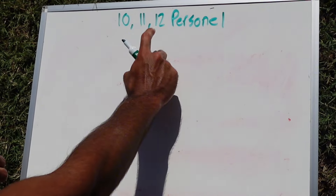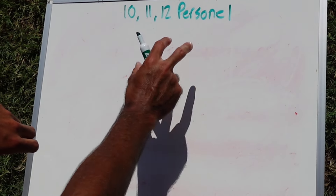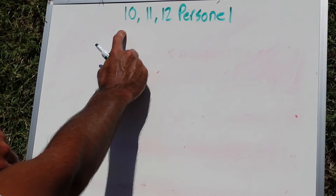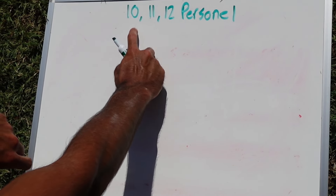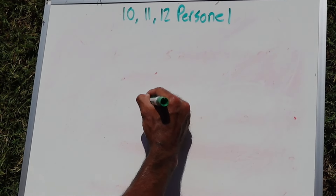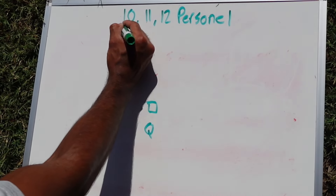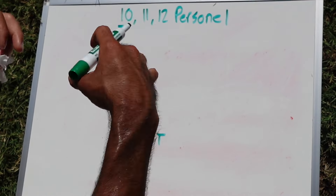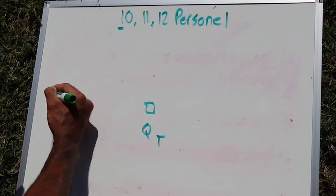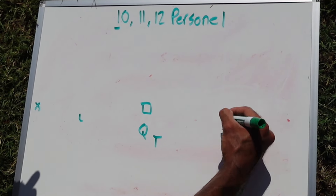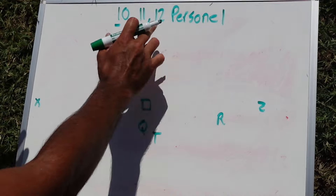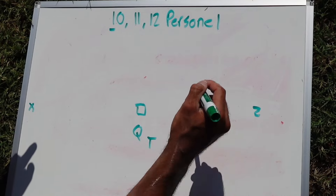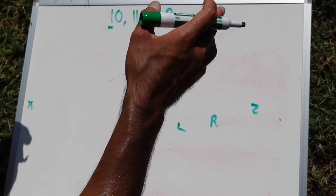We're going to be going over 10, 11, and 12 personnel — something you'll hear thrown out by different football coaches and offenses. The first number represents how many running backs there are, and the second number represents how many tight ends there are. In 10 personnel, you have one running back and no tight ends, so it could be either a trips or a doubles formation — for example, X, slot, slot, outside. That would be classified as 10 personnel.